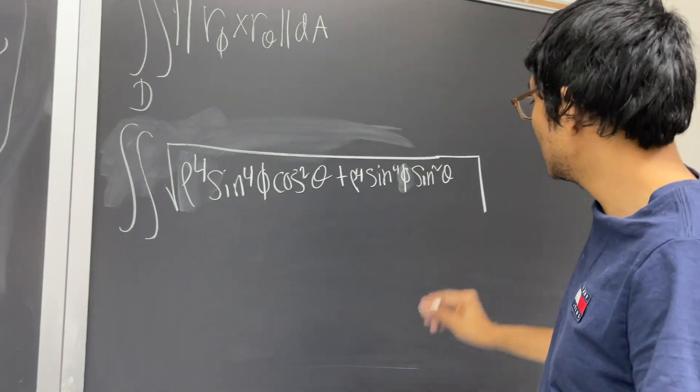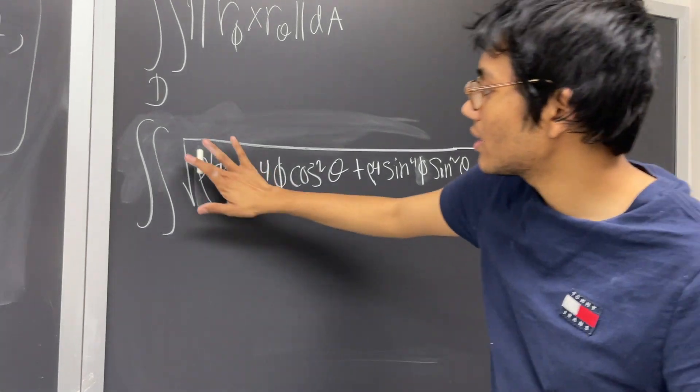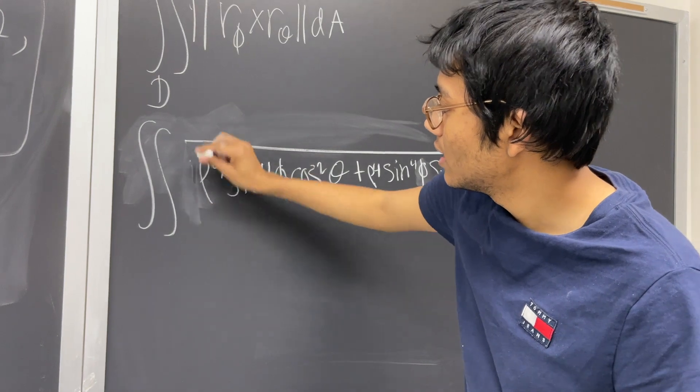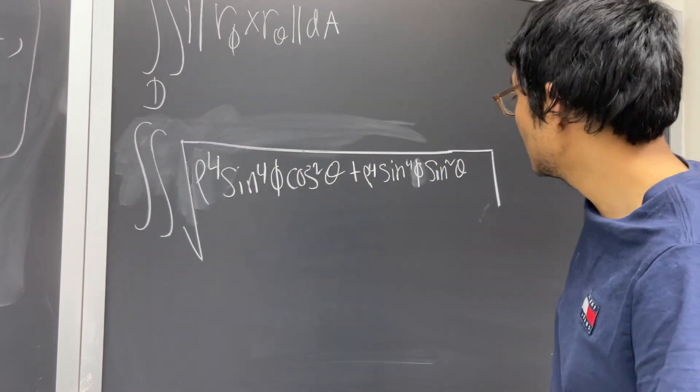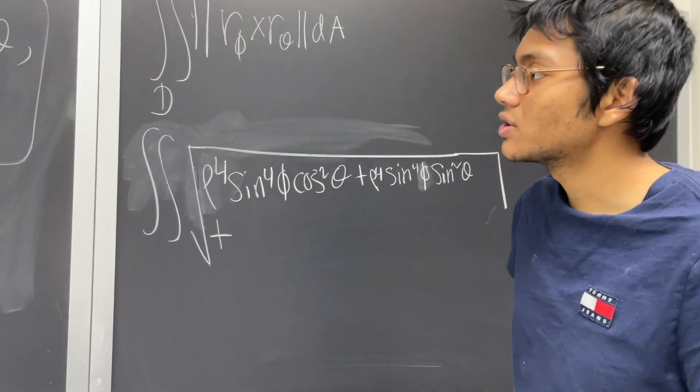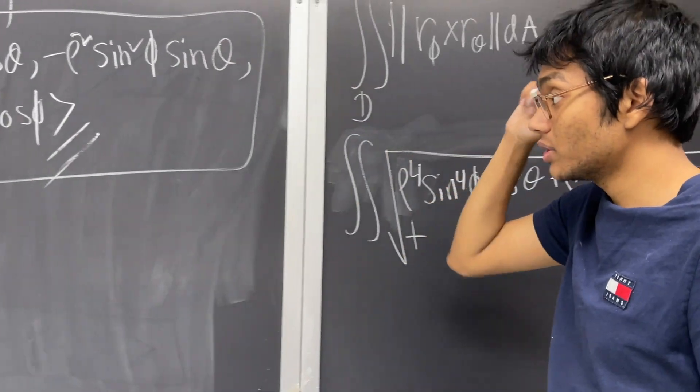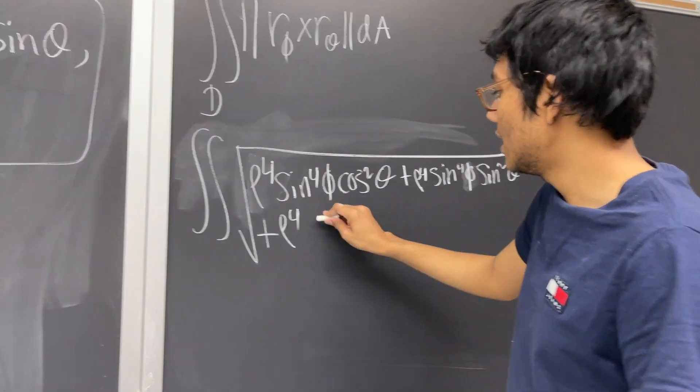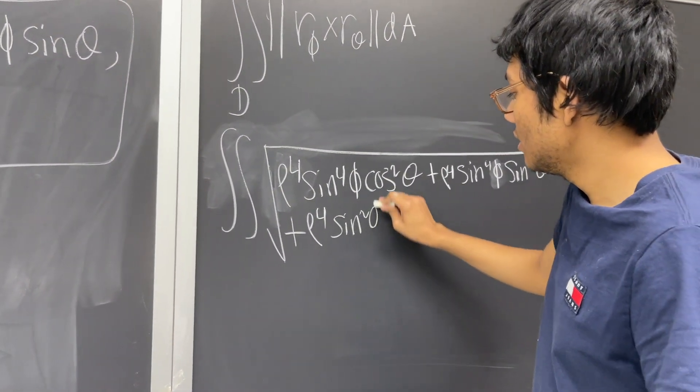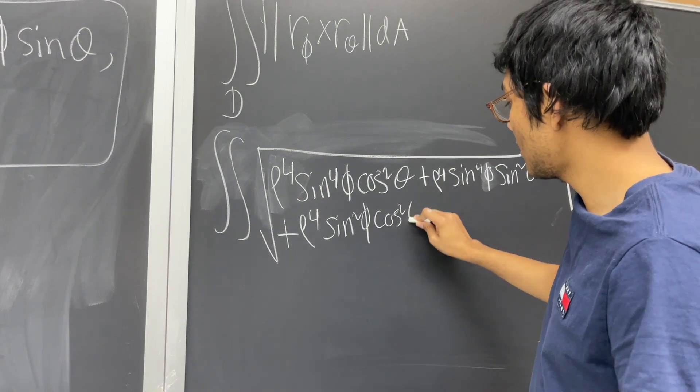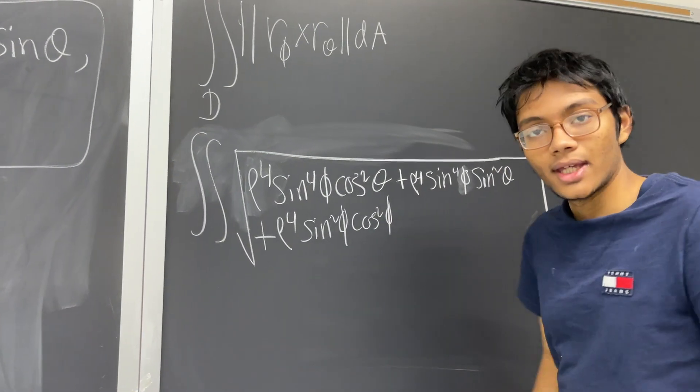And we have one more component. As you can see, I am making my radical bigger to accommodate my third component, which is the z component, so plus this component squared, which is going to give me rho to the fourth power, sine squared phi, cosine squared phi.